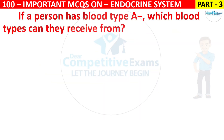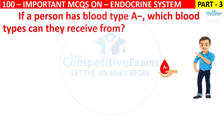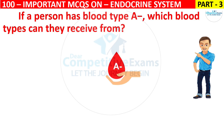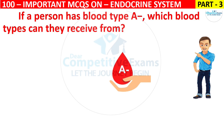If a person has blood type A negative, then which blood types can they receive from? Your options are A negative and O negative, A positive and A negative, O negative only, or A negative only.